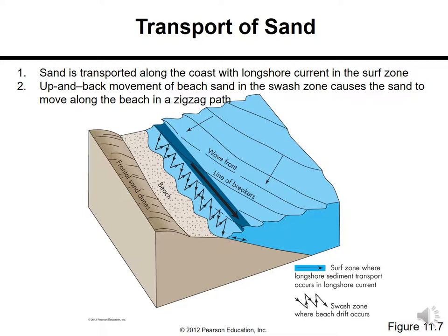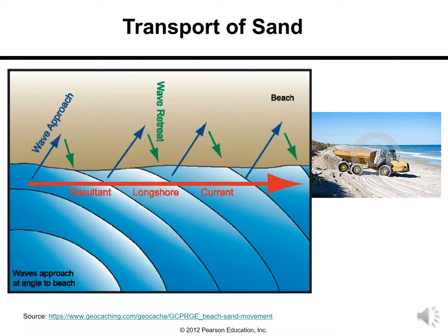The swash zone is where the zigzag movement occurs. Sand transport has two components: sand transported along the coast by the longshore current in the surf zone, denoted by the dark arrow; and the up-and-back movement of beach sand in the swash zone, which causes sand to move along the beach in a zigzag path. In both ways, sediments are being transported. Longshore currents bring sediments towards the beach.